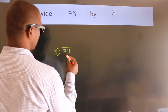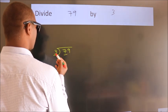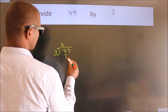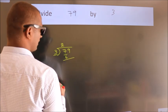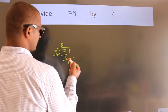Here we have 7, here 3. A number close to 7 in 3 table is 3 times 2 equals 6. Now we should subtract, we get 1.